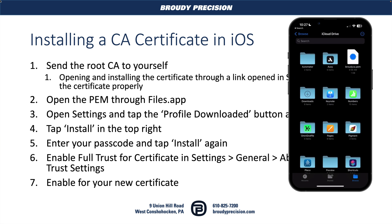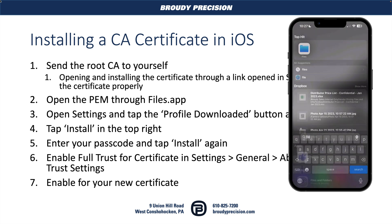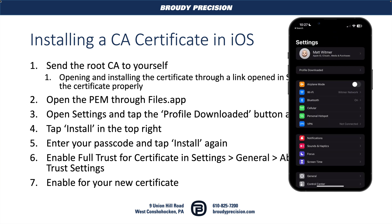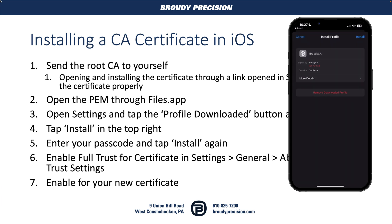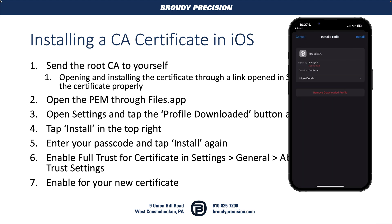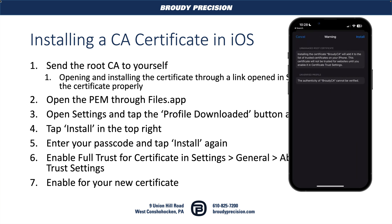We obviously don't want to be installing certificates for things we don't actually trust. So I'm going to open up Settings. At the very top you'll see there's a 'Profile Downloaded' button that's appeared — that's new since I brought in that CA. I'll tap it and it'll show what the CA is, that it contains a certificate, and all the details on the certificate. If everything looks good, we'll hit Install, then confirm by putting in our passcode.